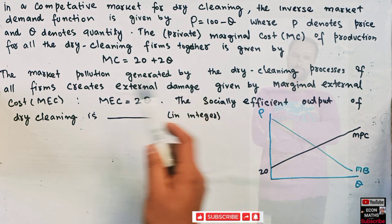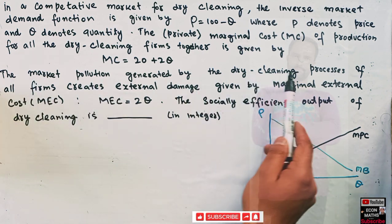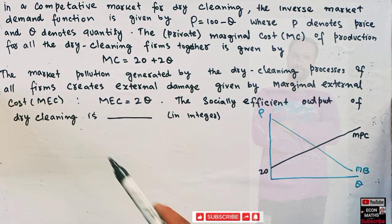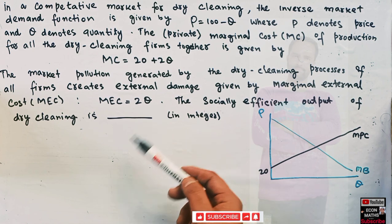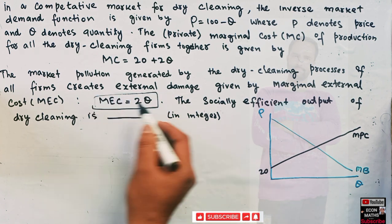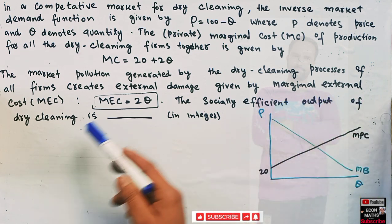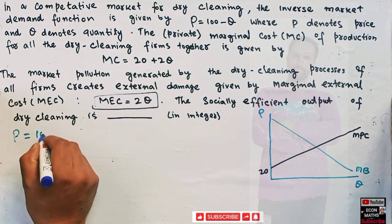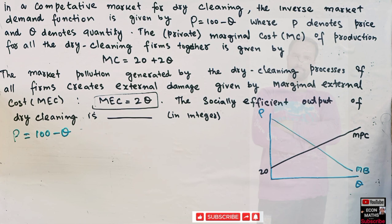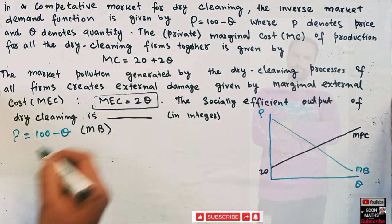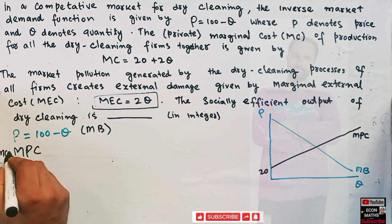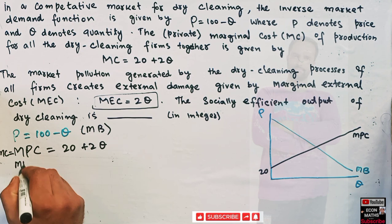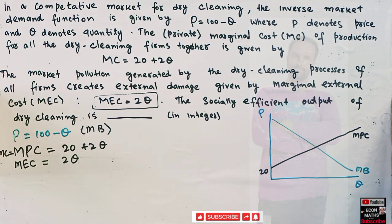This is our marginal private cost. We are also told that market pollution generated by the dry cleaning process creates external damage given by the marginal external cost curve: MEC = 2Q. This means in the process of dry cleaning we also damage the environment, and the marginal external cost is 2Q. Our goal is to find the socially efficient output level. So to summarize: marginal benefit is 100 minus Q, marginal private cost is 20 plus 2Q, and marginal external cost is 2Q.